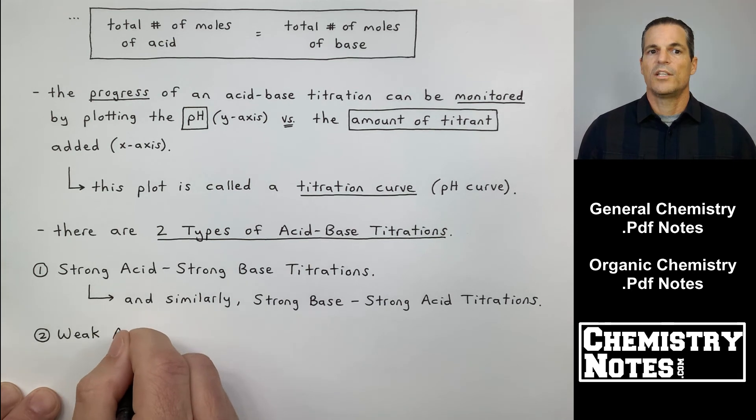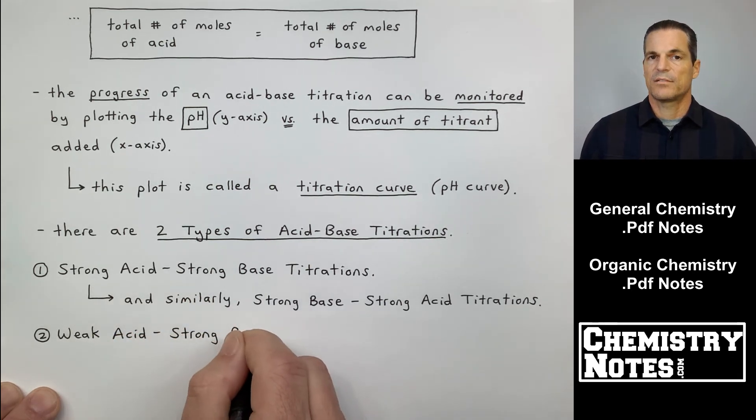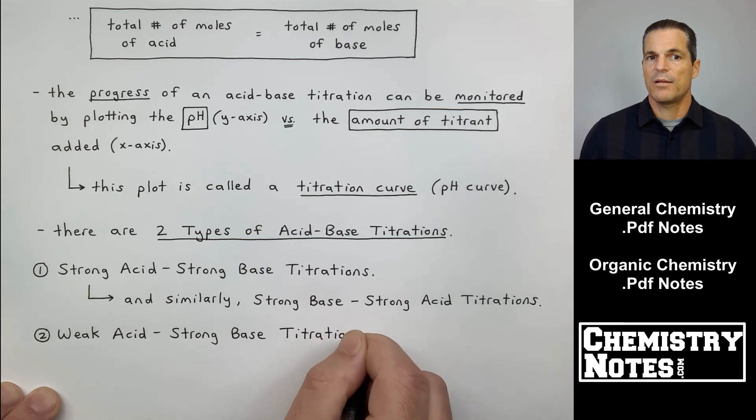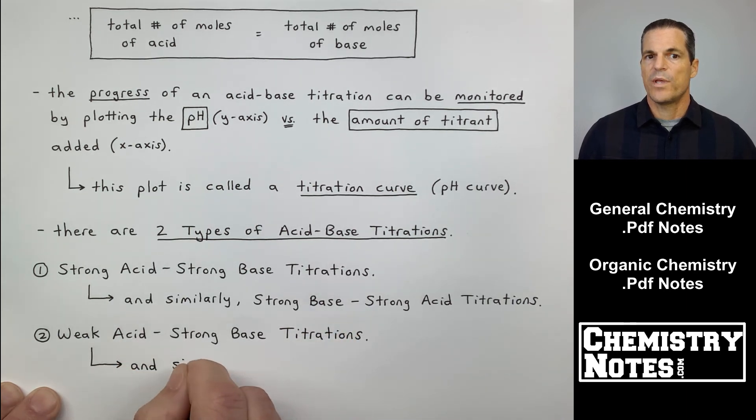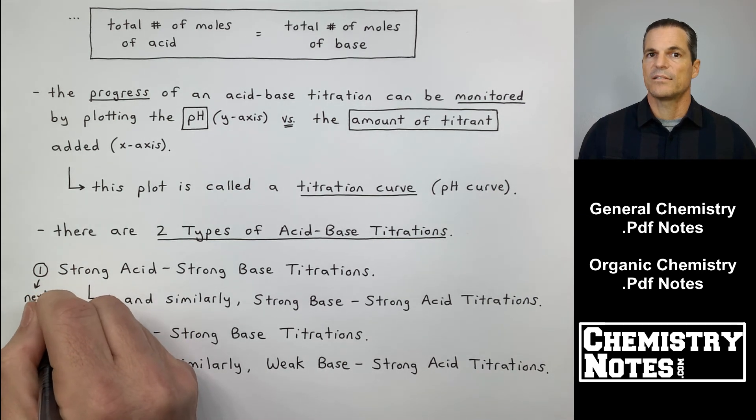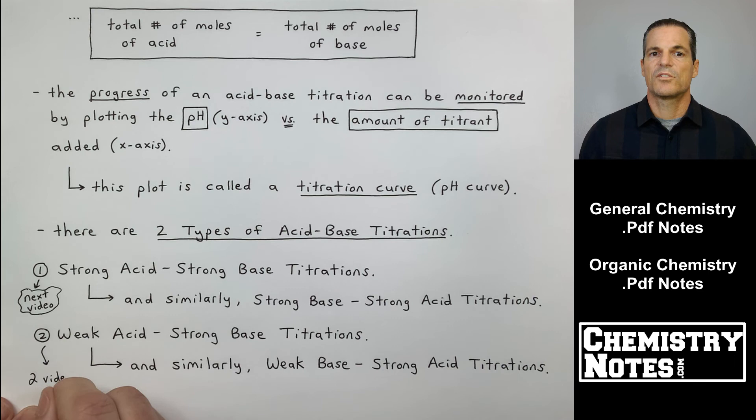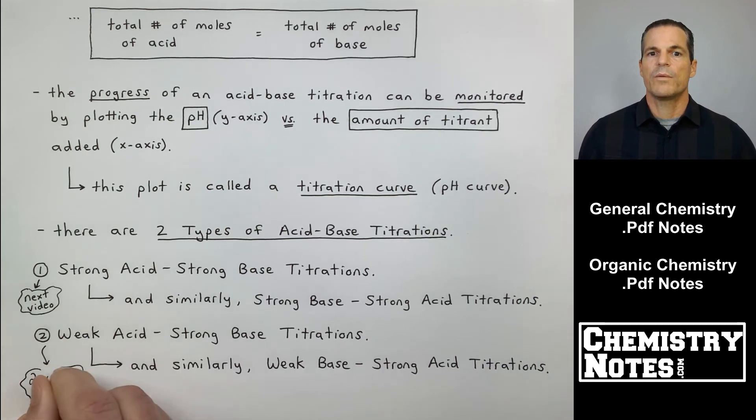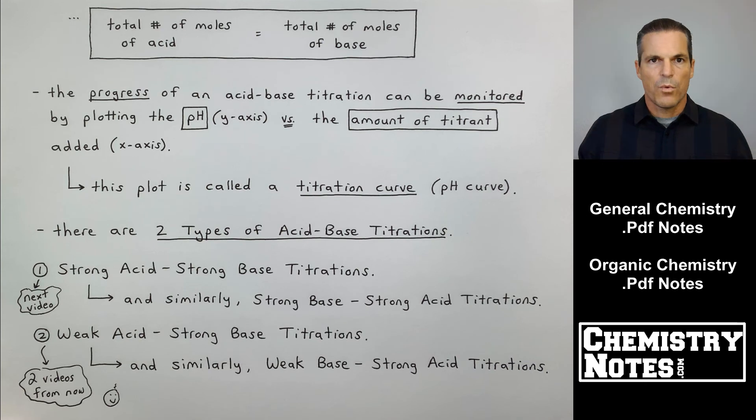Number two is when you have a weak acid-strong base titration. Or similarly, what do you think? Instead of a weak acid-strong base, it's going to be a weak-base-strong acid titration. So there are two types of acid-base titrations. Strong acid-strong base titrations, or strong base-strong acid titrations. And number two, weak acid-strong base titrations, or similarly, weak-base-strong acid titrations. That's very wordy. In just the bottom one-third of the page there, you see strong acid-strong base-strong base-strong acid-weak acid. It's a mess.